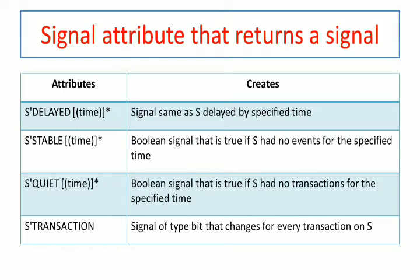Now let us look at signal attributes used to return a signal. There are four types: s'delayed, s'stable, s'quiet, and s'transaction. s'delayed creates a signal which is the same as s but delayed by a specific time. For example, if the input signal has a value of 1 from 0 to 10 nanoseconds, that value will be shifted by the given amount of time, creating a delayed version of the signal. s'stable creates a boolean signal that is true if s had no events for the specific time.